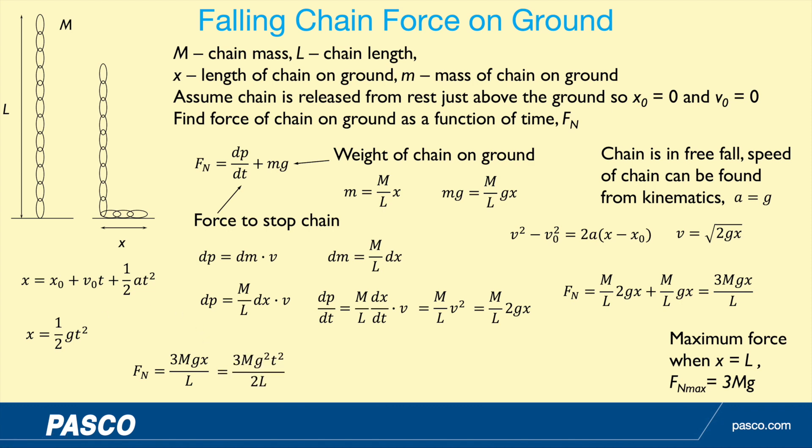I get our final result: F_N = (3Mg^2t^2)/(2L). This is the force from the ground on the chain as a function of time. We can see it's a function of time squared, so we'd expect a curve when we graph this. But you have to be careful - this doesn't work for all time. It's only while the chain is falling, from time zero to a maximum time when the whole length has fallen.